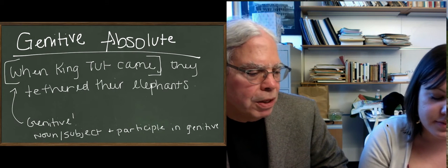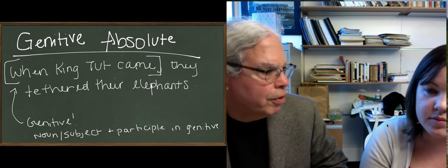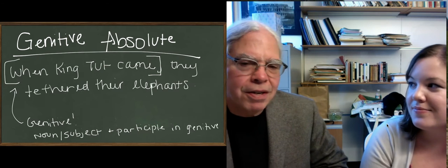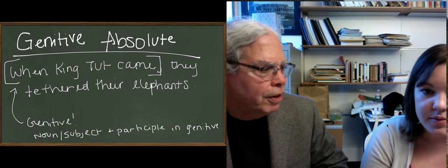So, what does this mean when you're reading Greek? This is the trickiest part. The little light bulb has to go off in your head. You see a noun in the genitive case and a participle agreeing with it in the genitive case.